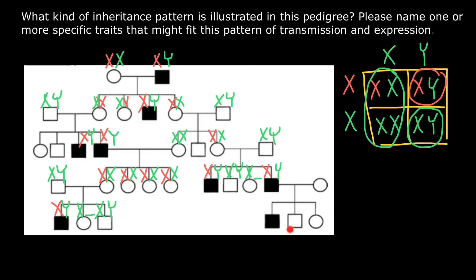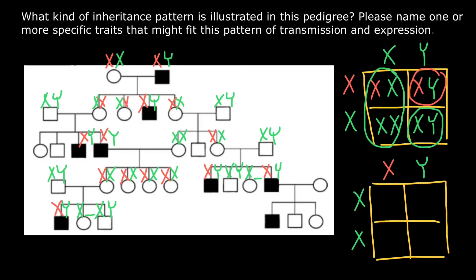Now it is interesting what we see here. Let me again show you a Punnett square. If the male is affected — because he has only one X chromosome — and the female is phenotypically and genotypically normal, we expect that all the females in their progeny are going to be carriers, and all the males are going to be phenotypically and genotypically normal. So 100% of the progeny are going to be phenotypically normal.